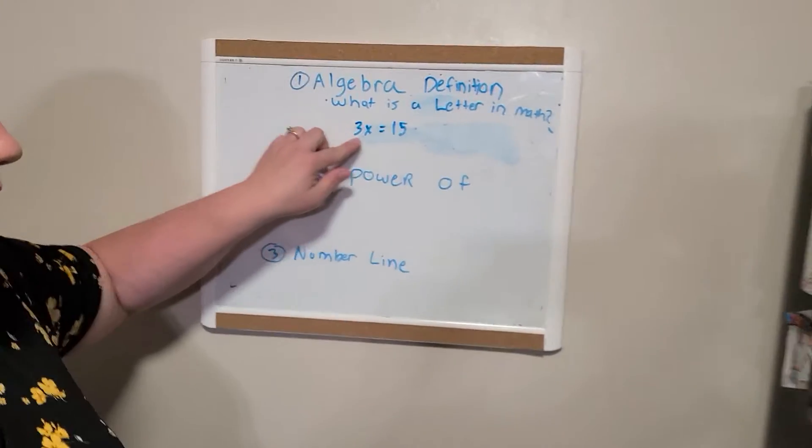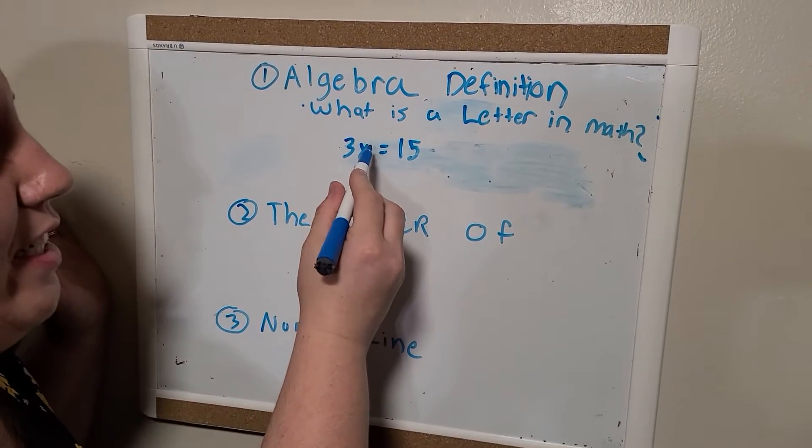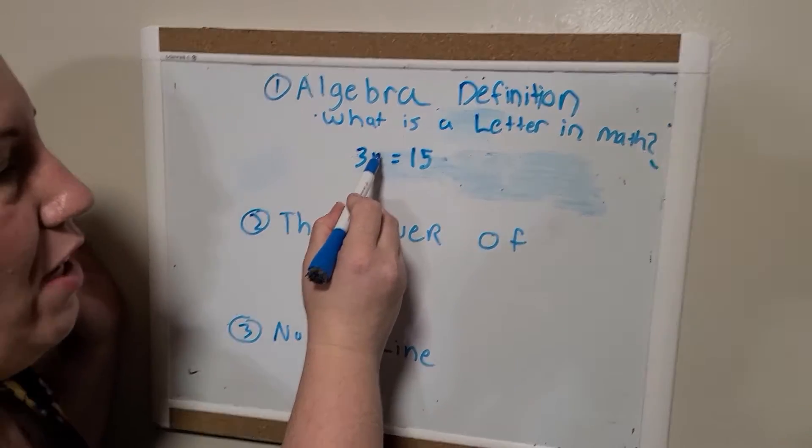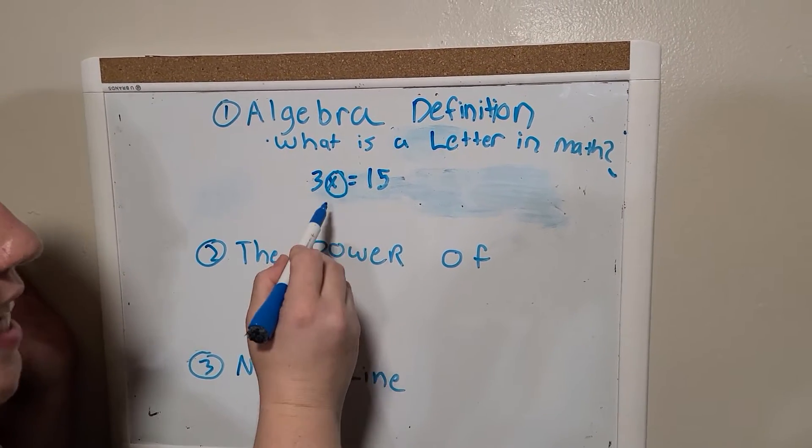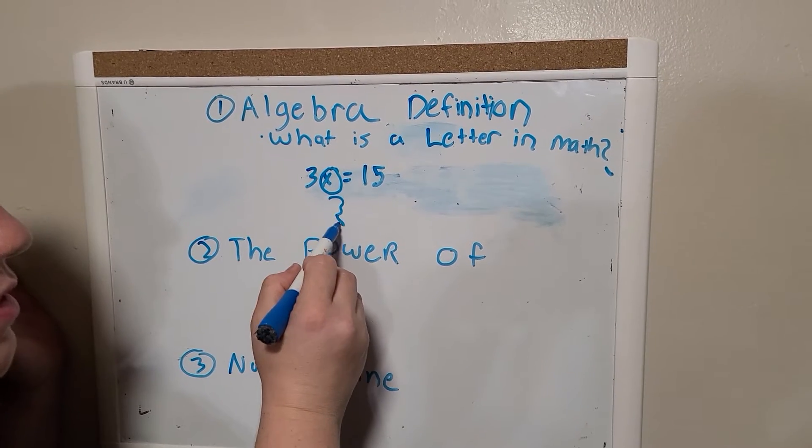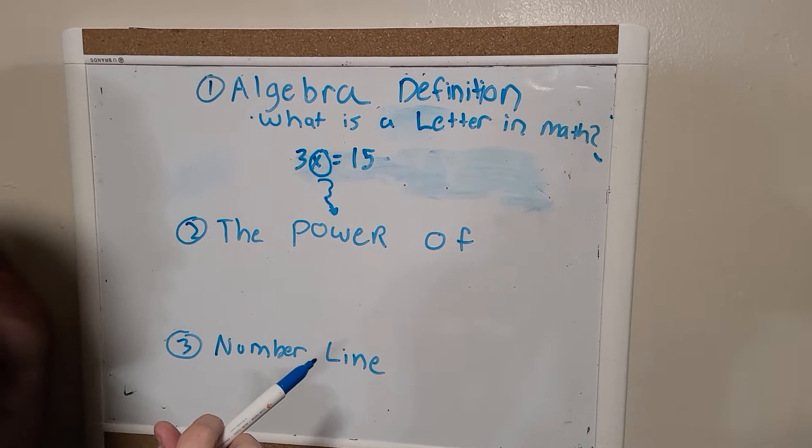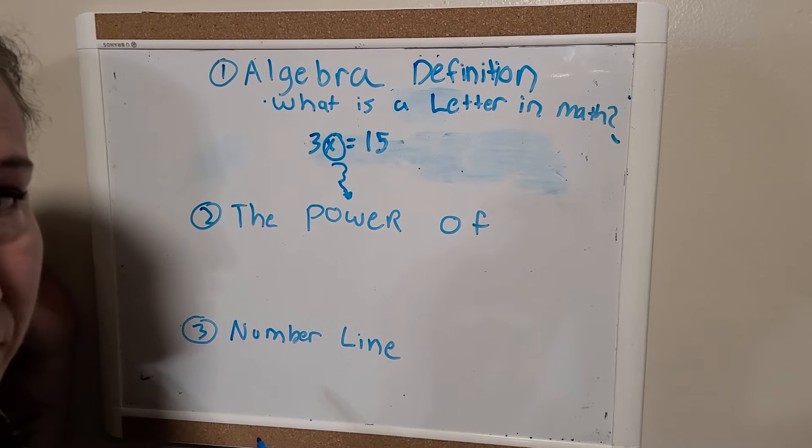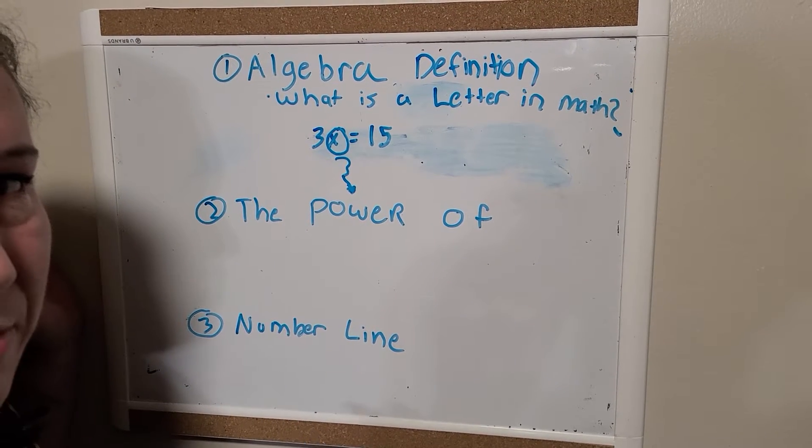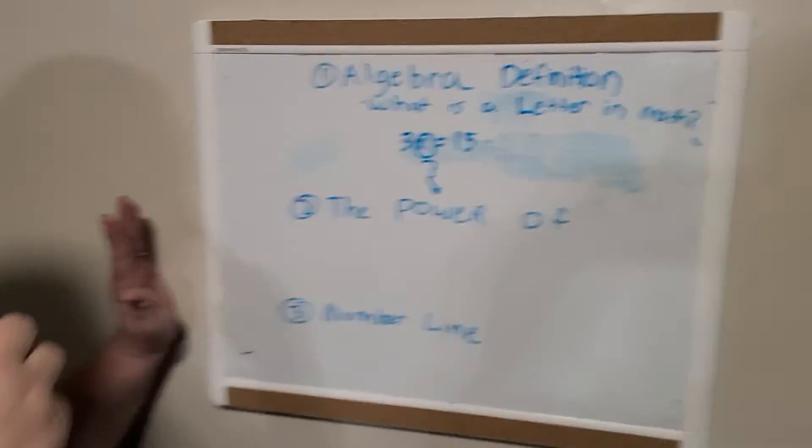Okay. This is 3x equals 15. What we're looking for, I'm not going to tell you how to solve this problem yet, because it will be confusing. But what we're looking for is we're trying to find out what is x. What is this number? That's a question mark. So that's what algebra is. You're using letters inside of an equation to find the answer to problems that would otherwise be very difficult to solve. Algebra is actually there to make it easier to solve more complex problems. So that is the definition of algebra.